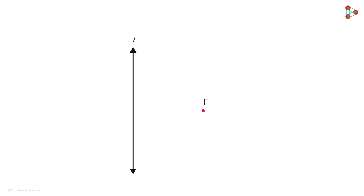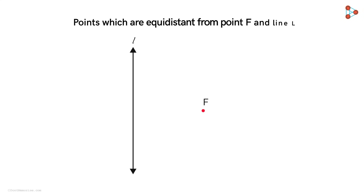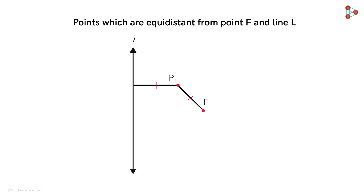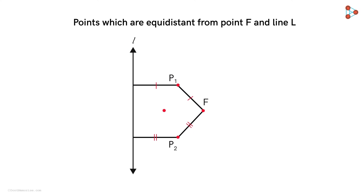Let's take a point on a plane and name it point F. Also, let's take a straight line and name it L. Now please listen carefully: we will consider points which are at an equal distance from point F and the line L. Are there any such points on this plane? Yes — consider point P1, which is at an equal distance from point F and the line L. Consider another point P2; its distance from point F will also be equal to its distance from line L. Another obvious point is the midpoint of the perpendicular segment connecting point F to line L. All such points that satisfy this condition will lie on this curve, and such a curve is called a parabola.